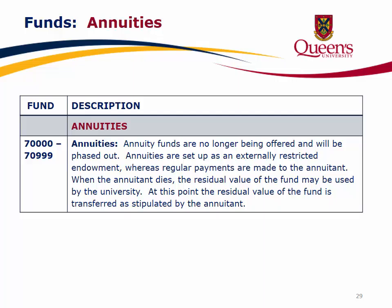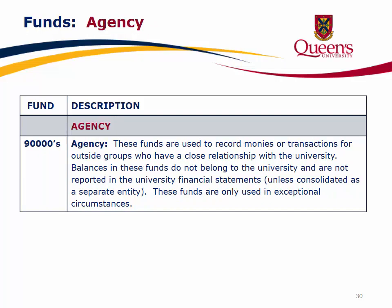Annuities are represented in fund range 7000 through 70,999. Annuity funds are no longer being offered and will be phased out. Annuities are set up as an externally restricted endowment where regular payments are made to the annuitant. When the annuitant dies, the residual value of the fund may be used by the university and transferred as stipulated by the annuitant. Funds in the 90,000 range are agency funds, used to record monies or transactions for outside groups with a close relationship with the university. Balances in these funds do not belong to the university and are not reported in university financial statements unless consolidated as a separate entity.